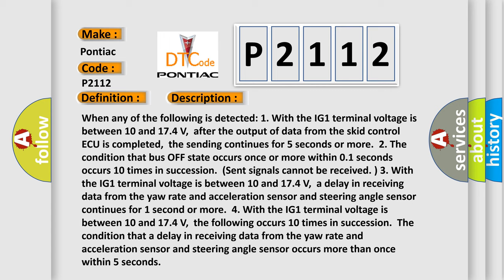Two, the condition that bus off state occurs once or more within 0.1 seconds occurs 10 times in succession. Three, the condition that a delay in receiving data from the yaw rate and acceleration sensor and steering angle sensor continues for 1 second or more.